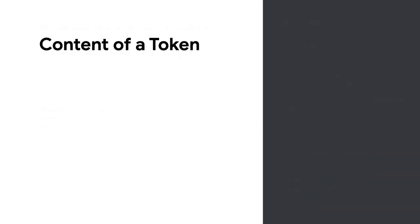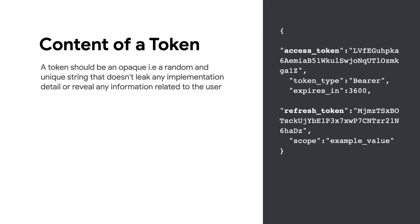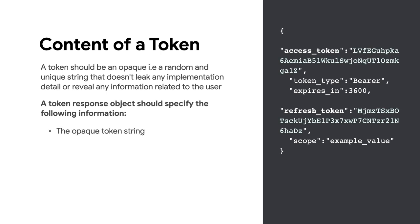Let's examine the content of the return token. In general, you want to create an opaque token — that is, a random and unique string that doesn't leak any implementation detail or reveal any information related to the user. An example of an opaque access and refresh token is shown here. A token should specify the following information: the opaque token string, the type of token (access or refresh), the expiration date of the token in seconds — 3600, for example, denotes that the access token will expire in one hour from the time it was generated — and the scope of access the client is limited to.